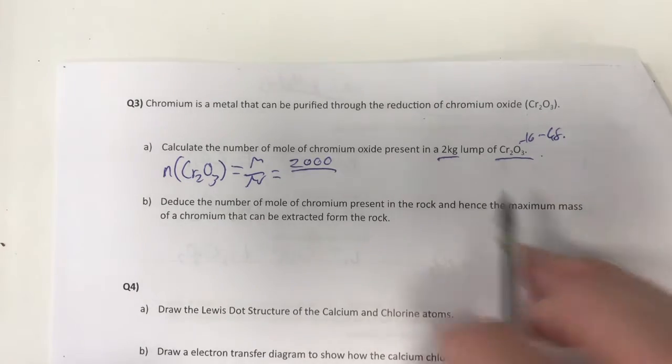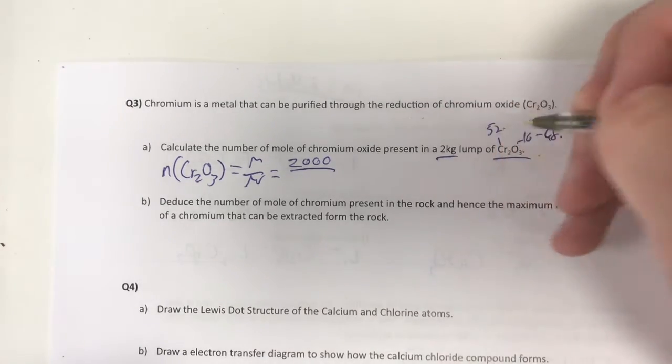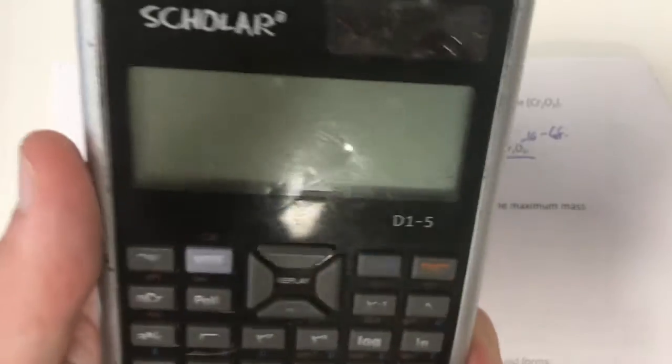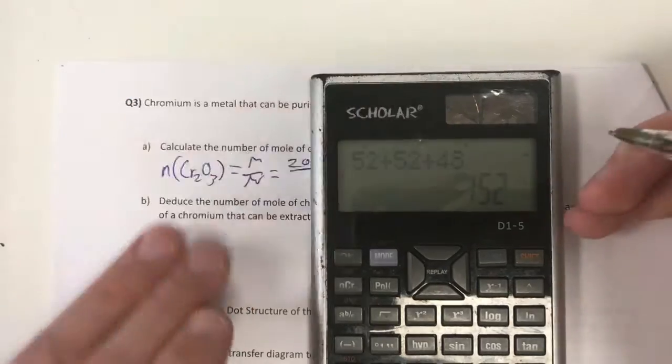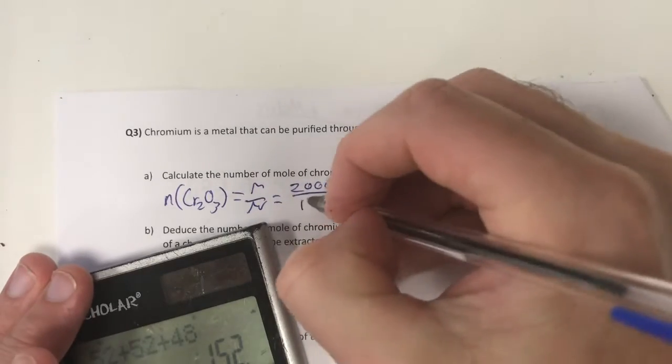Now, oxygen I know is 16, so that's going to be 48 for three of them. Chromium, on the other hand, I need to use my periodic table to work out that it's 52. So therefore, if I go in here and go to my calculator and go 52 plus 52 plus 48, my molar mass of chromium oxide is 152.